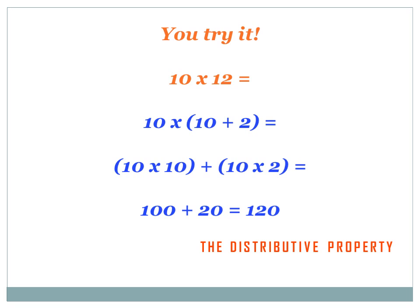Were you able to do it in your head? I hope so. 10 times 12 equals 10 times the expression (10 plus 2). Now we've got to multiply the 10 times both of the numbers within the expression, the 10 and the 2, and add those two results together. So 10 times 10 equals 100, and 10 times 2 equals 20. 100 plus 20 equals 120.